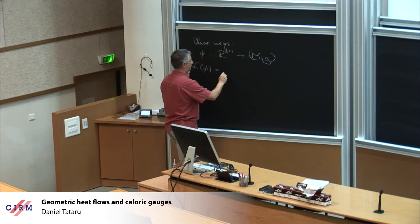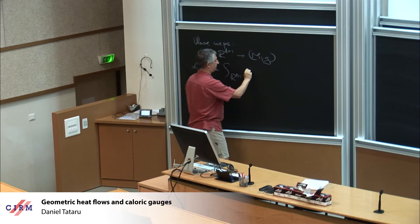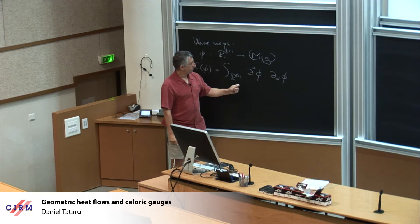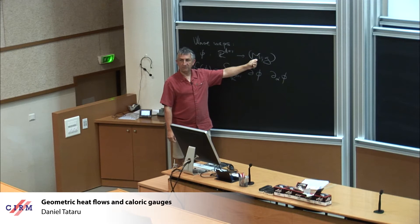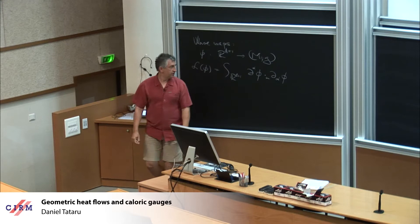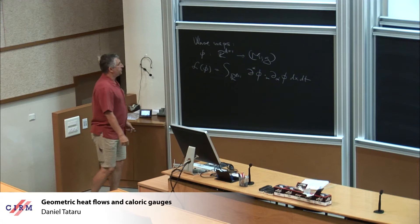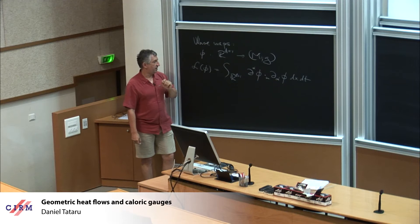If you think about this, derivatives of phi will be vectors in the tangent space of M. So here, this dot product is a dot product with respect to the metric M. The integration is with respect to x and t. And so, critical points — formal critical points for this Lagrangian — will be called wave maps.